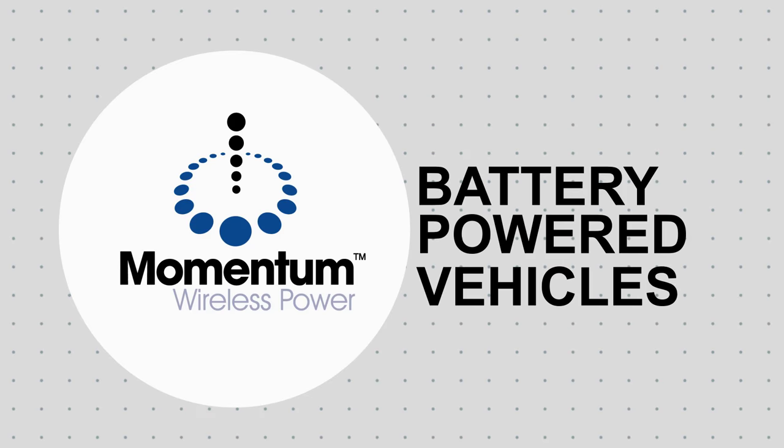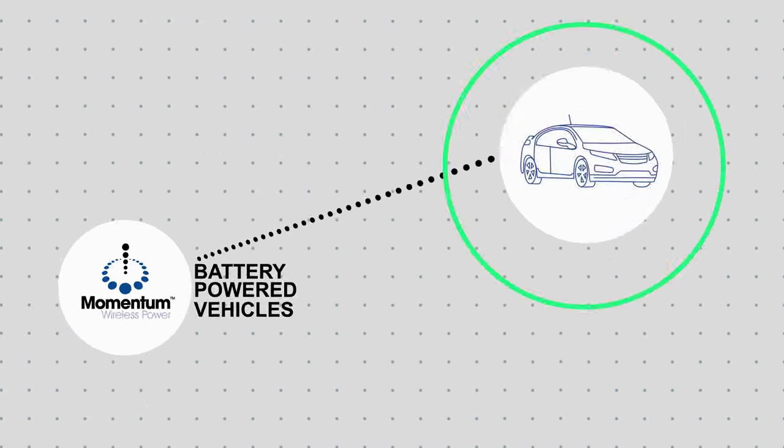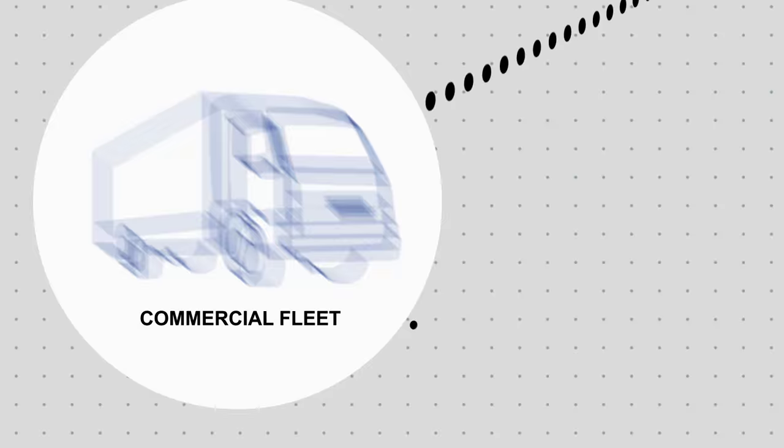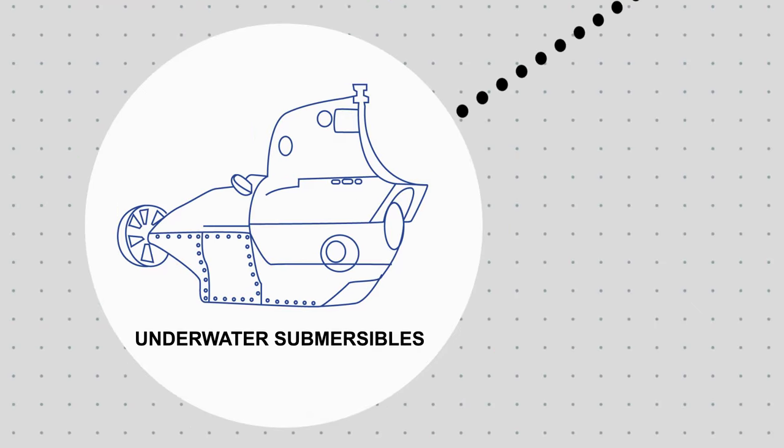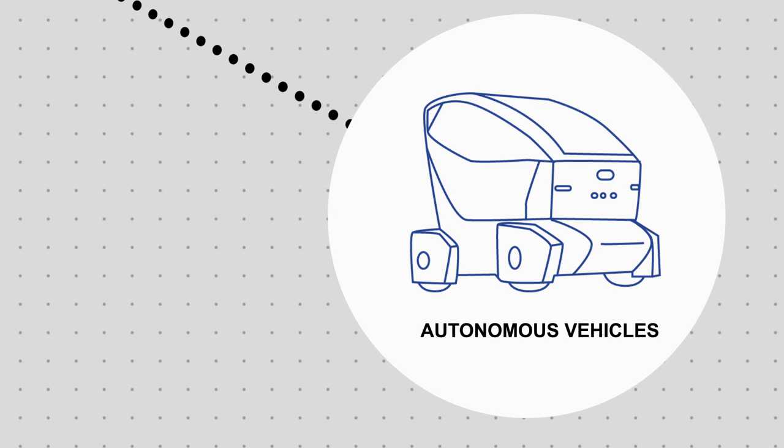These battery-powered vehicles include all types of vehicles, from passenger cars, commercial fleet vehicles, forklifts, utility vehicles, airport ground equipment, to underwater submersibles and autonomous vehicles.